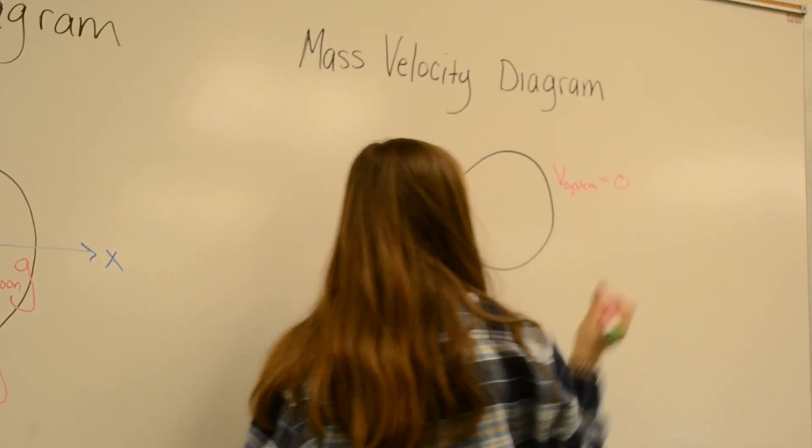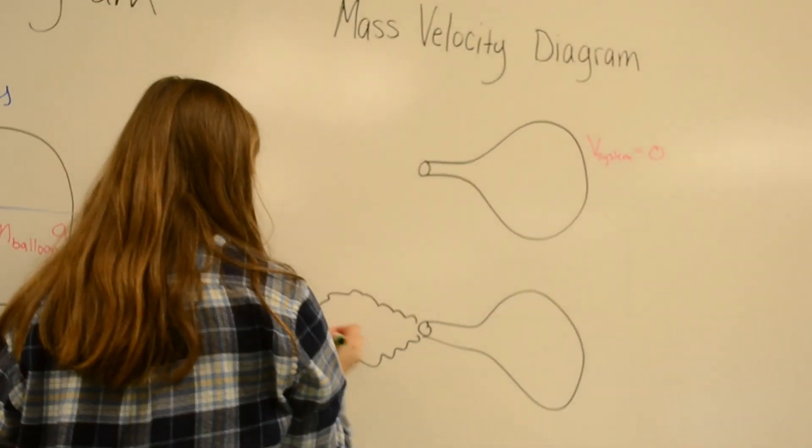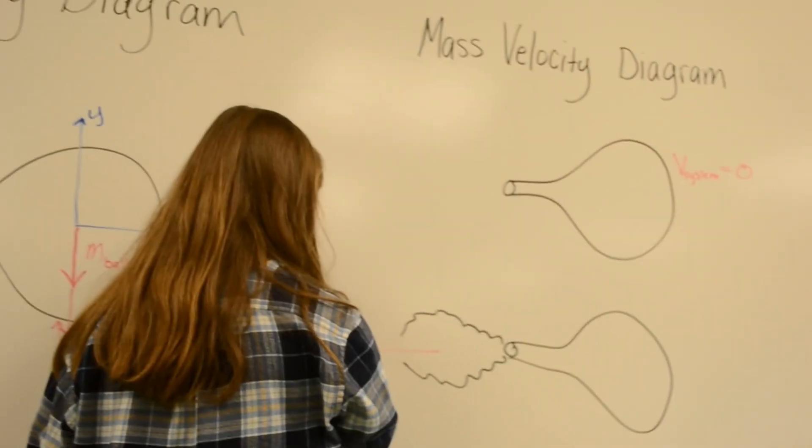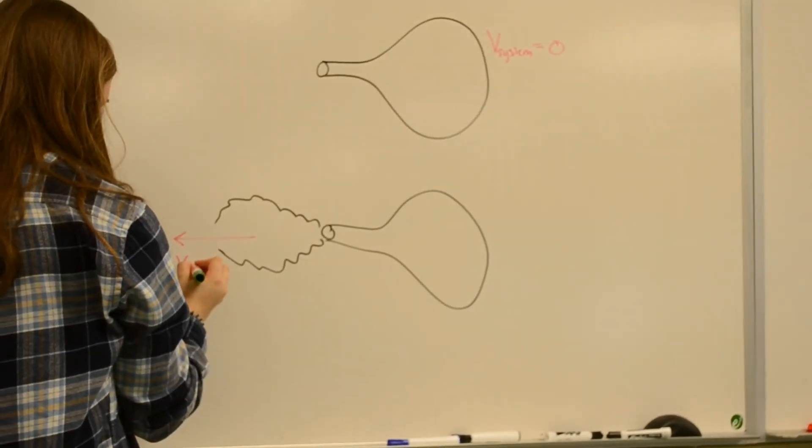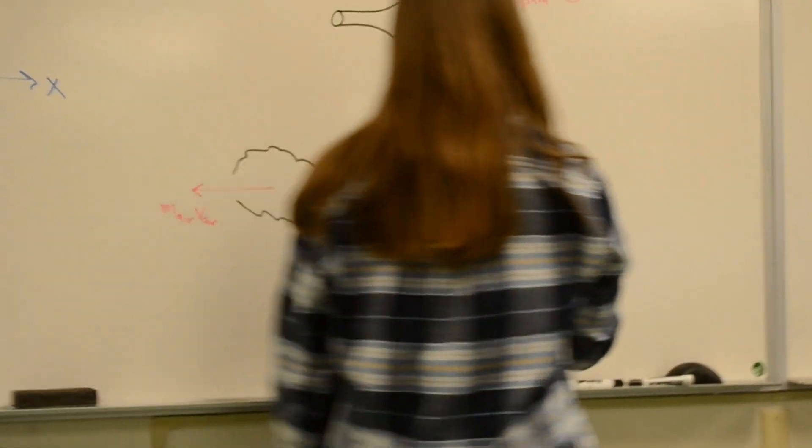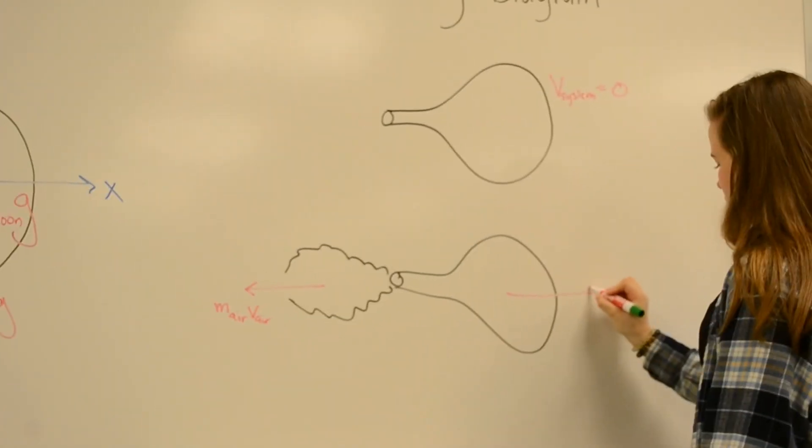Initially, the system is all at rest, so the velocity of the system is zero. After release, the balloon moved to the right and the air moved to the left, so their velocities are drawn accordingly.